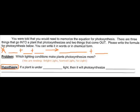You were told that you would need to memorize the equation for photosynthesis. There are three things that go into a plant that photosynthesizes and two that come out. Please write the formula for photosynthesis in the space below. You can write it in words or in chemical form. Please do that now.